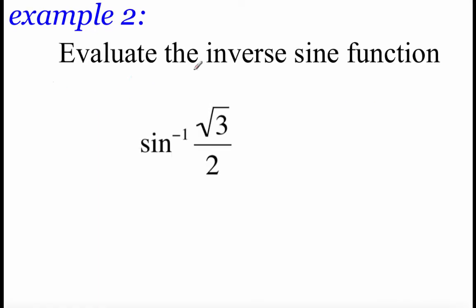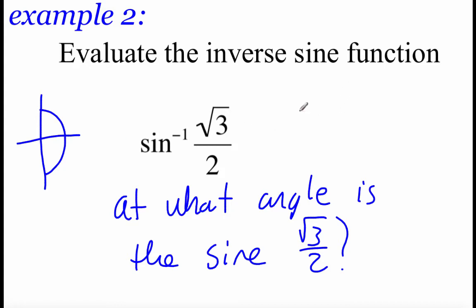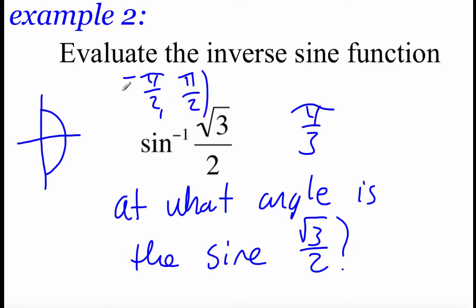Looking at example 2, we're going to do the inverse sine of root 3 over 2. We're thinking about the right half of our unit circle, trying to figure out at what angle we have a sine of root 3 over 2. This one's positive, so we're looking in the first quadrant, and the angle we find is pi over 3. Pi over 3 is between negative pi over 2 and pi over 2, so this is our answer.